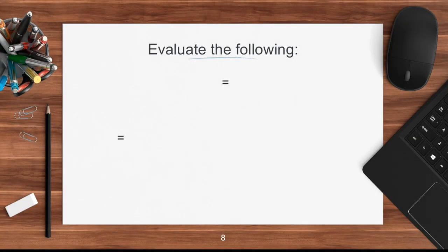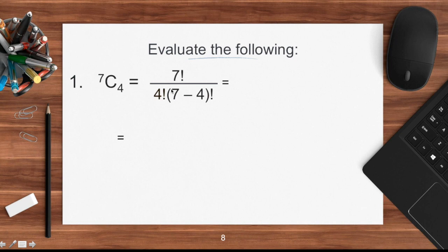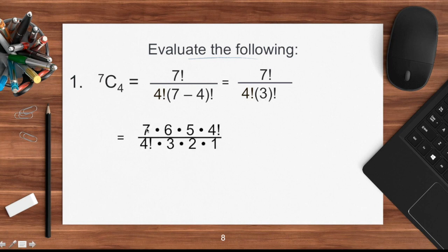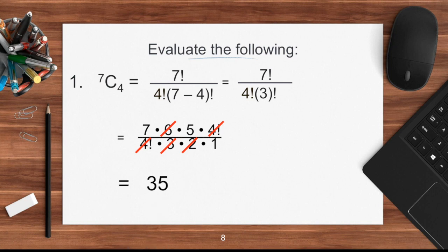Let's try evaluating a combination. Combination of seven taken four: following the formula, we have seven factorial divided by four factorial times three factorial. Expanding: seven times six times five times four factorial, divided by four factorial times three factorial. Four factorial cancels out, and three times two cancels with six. We are left with seven times five, which equals 35.